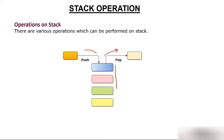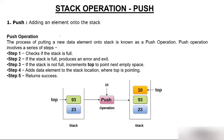Let me explain the steps involved in a push operation. In the figure, there is a stack with two elements: 23 and 93. The top pointer points to position 2, where 93 is located. Now if you want to push element 10, the first step is to check if the stack is full. Whenever you want to insert or push an element into the stack, you always check whether it is already full.